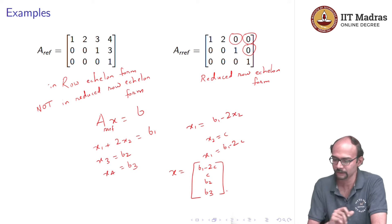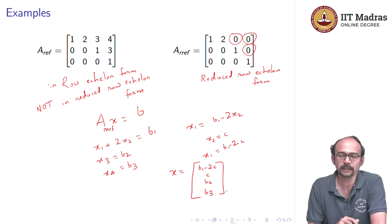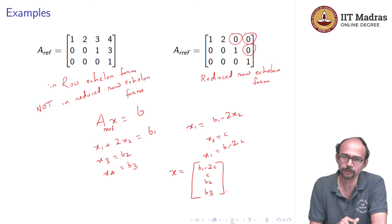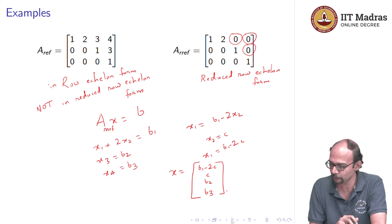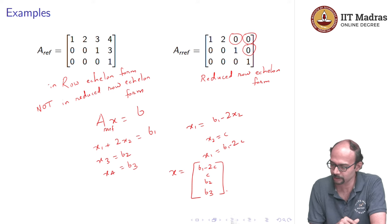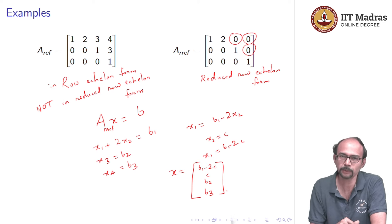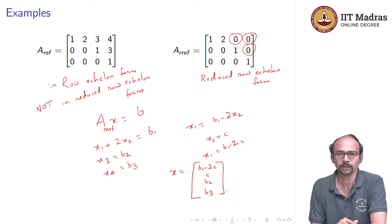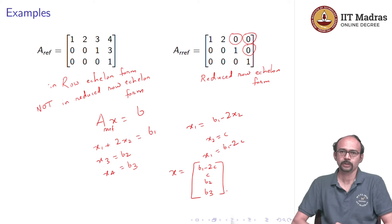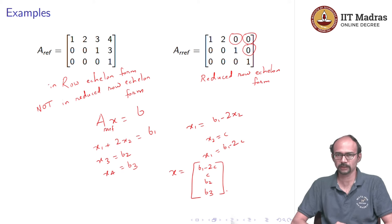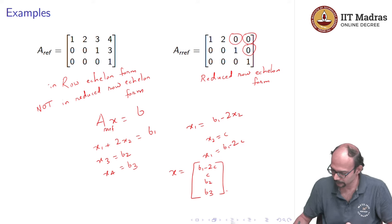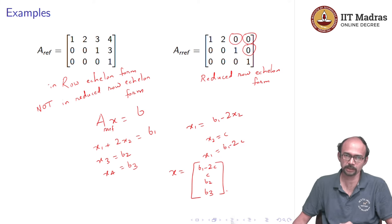Whatever value of c you substitute gives a solution. For example, if c = 0, the solution is (b1, 0, b2, b3); if c = 5, the solution is (b1 − 10, 5, b2, b3). We can read off solutions for these matrices in this way — not just some solutions but all solutions. This is the use of the row echelon form or reduced row echelon form.